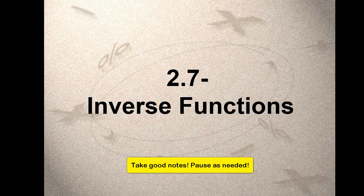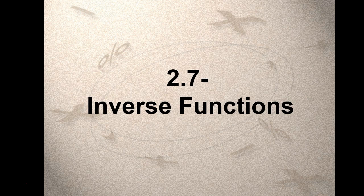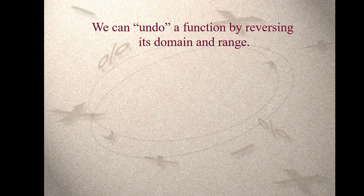We've reached the last section of Chapter 2, section 2.7 on inverse functions. The idea of an inverse function is that functions are related to each other if they undo each other. For example, if one function has addition, its inverse would have subtraction. There are a lot of opposite inverse relationships.